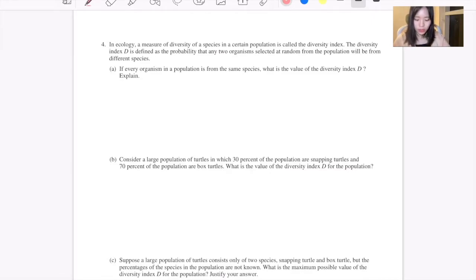Now let's read the question. In ecology, a measure of diversity of a species in a certain population is called the diversity index. The diversity index D is defined as the probability that any two organisms selected at random from the population will be from different species.